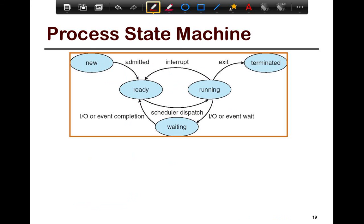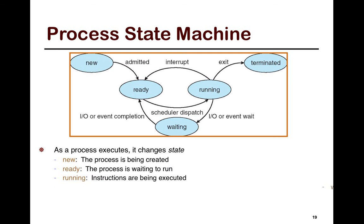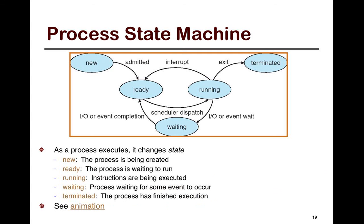In this figure, what I've shown is a process state machine. A process state machine essentially keeps track of the different phases that a thread or a process goes through. I'm going to show all the states and then we can talk about them.